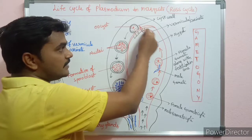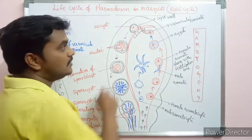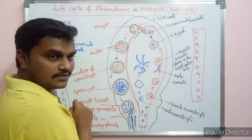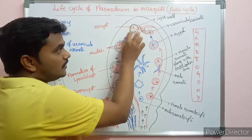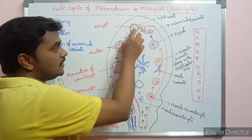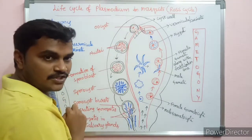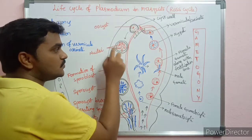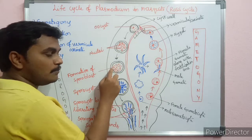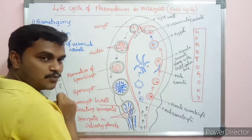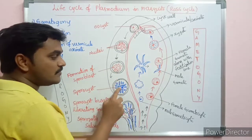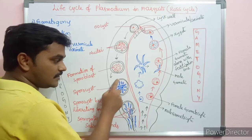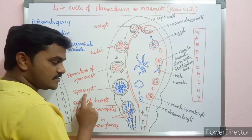After some time the zygote transforms into a long, slender, motile structure called the vermicule, also known as the ookinete. The ookinete pierces the wall of the crop and enters the next region, where it turns into an oocyst by formation of a cyst wall. Inside the oocyst, the nucleus undergoes repeated reduction divisions and mitotic divisions, forming a large number of nuclei, which then transform into sporoblast-like structures called sporoblasts.